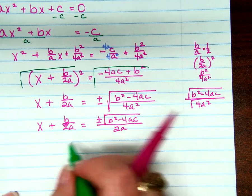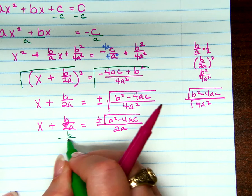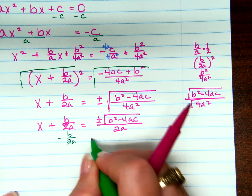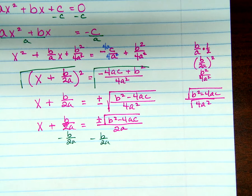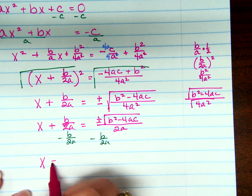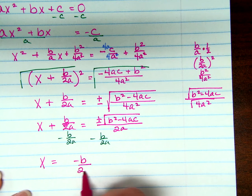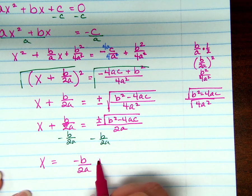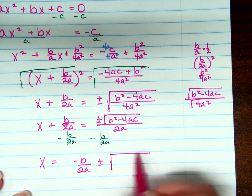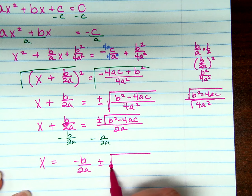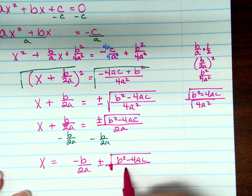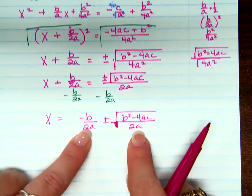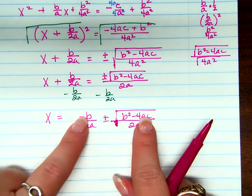And then to solve for x, I just subtract b over 2a. And I get x equals negative b over 2a plus or minus the square root of b² minus 4ac over 2a. And since those both have the same denominators, can't I just combine them?